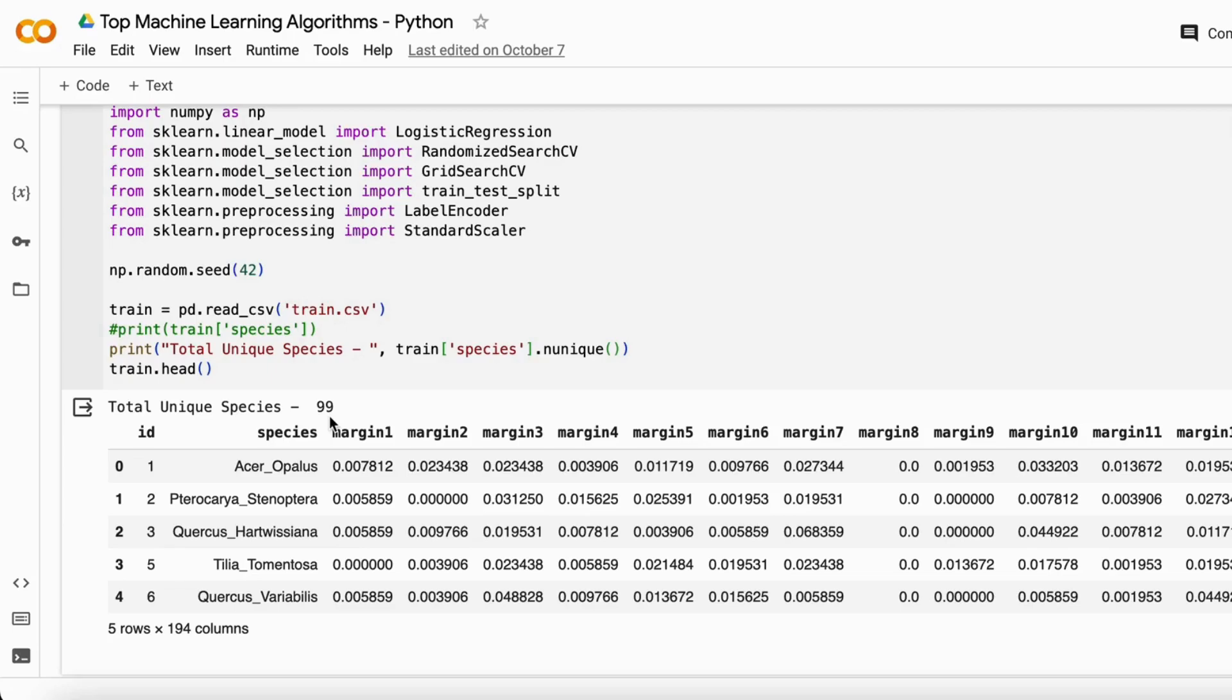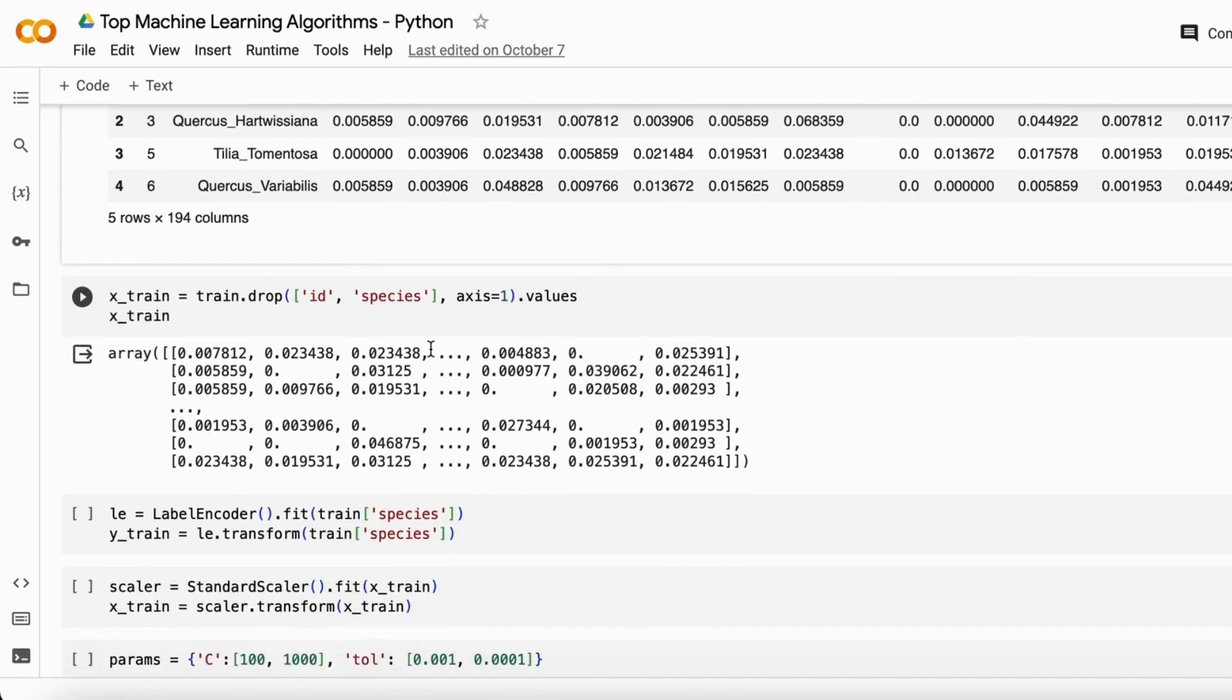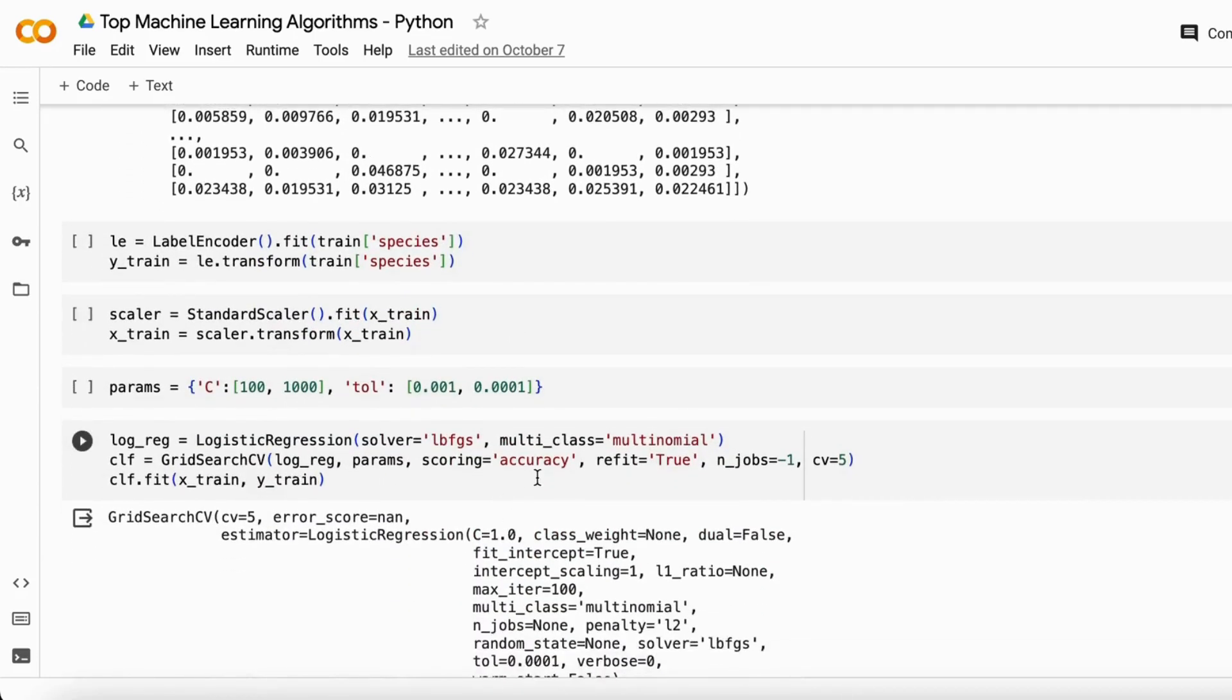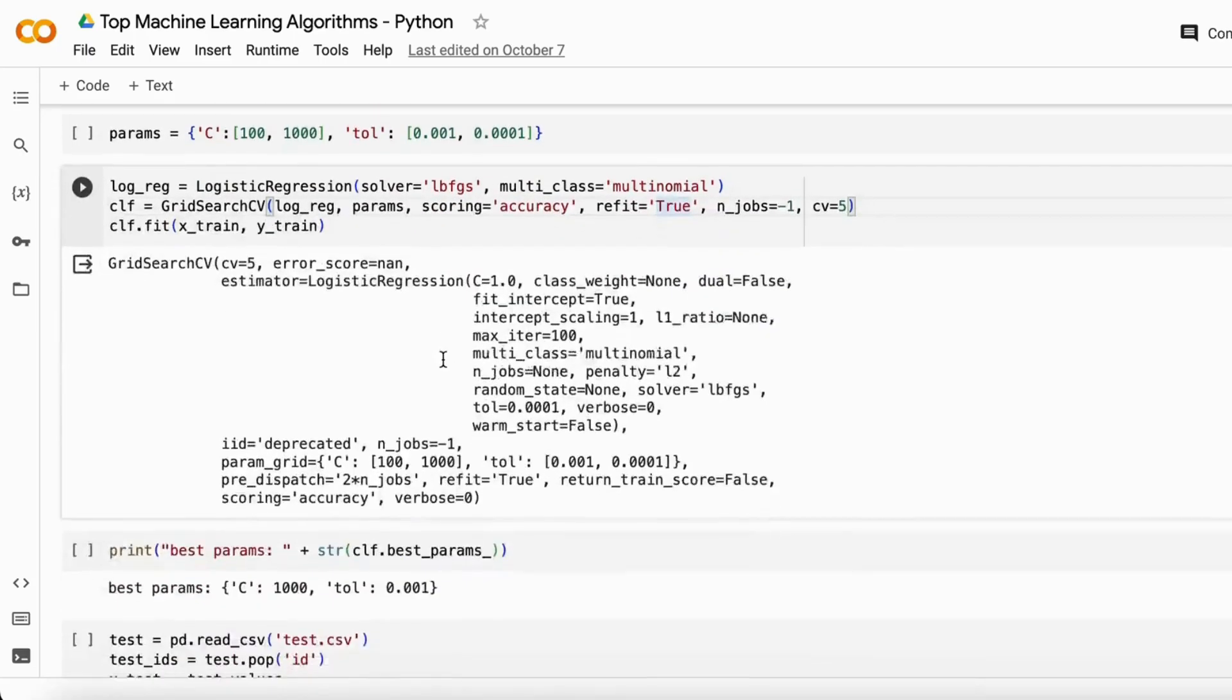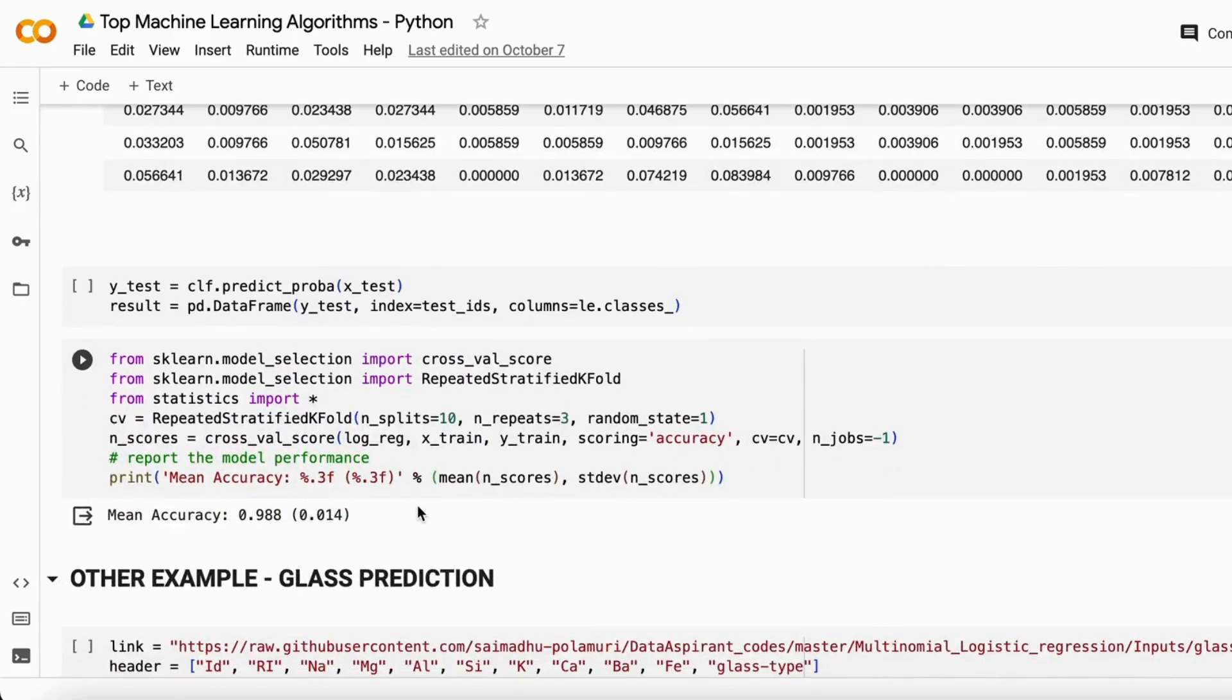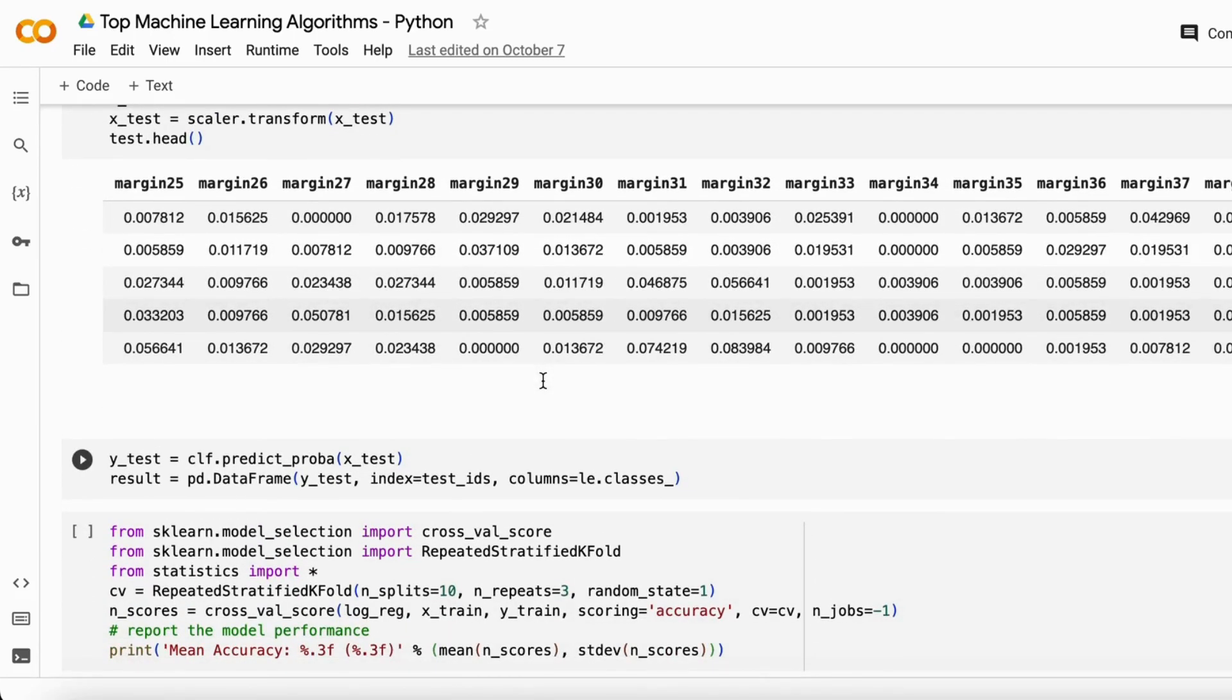Then you do some feature engineering, label encoding, standard scaling, and build the logistic regression multinomial model with the multi-class attribute set to multinomial. When you fit and find the accuracy of this model, you will see it gives you accuracy of 98%. This shows the model will be able to predict all species correctly 98% of the time.